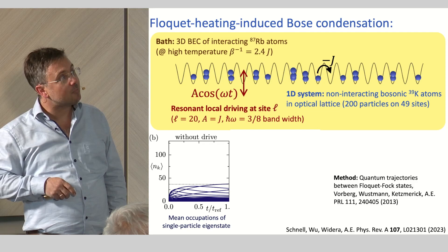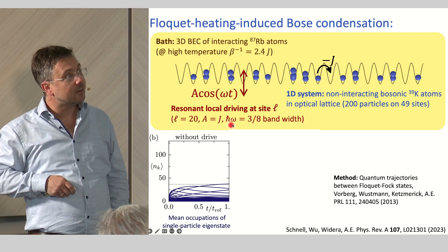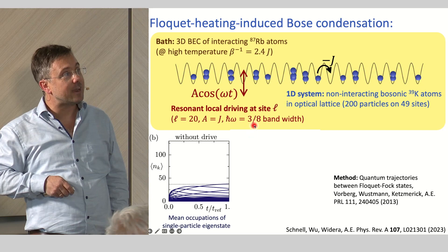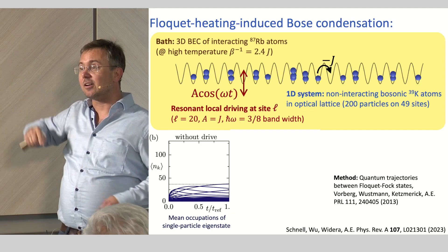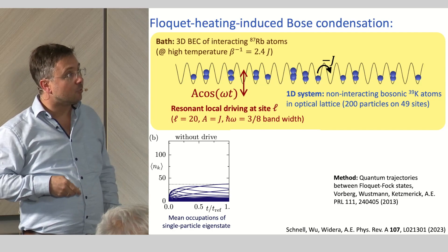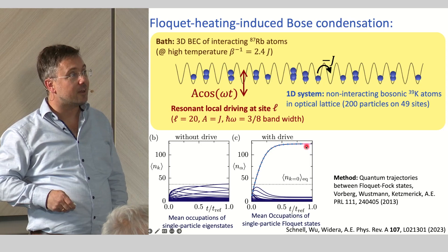If you now, additionally to this hot bath, you start driving your system locally at one lattice site with a rather large amplitude, which is equal to J and a frequency which just lies in the middle of the bandwidth of this 1D model. So it's three-eighths of the bandwidth. So it's really resonantly driving and it's something which would heat the system up actually, you would expect to heat it up. It's not in the high frequency regime where most of this Floquet engineering works. It's really in the regime where you would heat the system up.